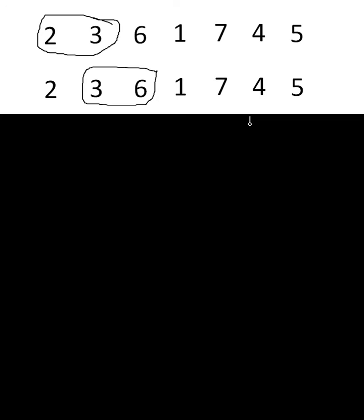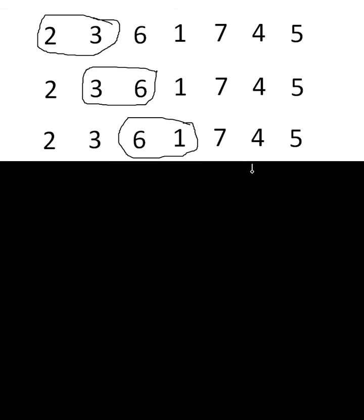Circle them, show that we're comparing them now. They're in the right order, don't do anything, move on to the next two numbers, six and one. Now they're in the wrong order, so we need to swap them round.